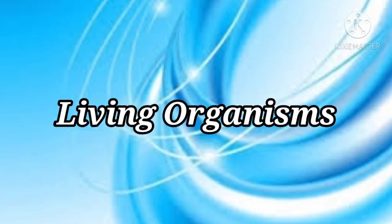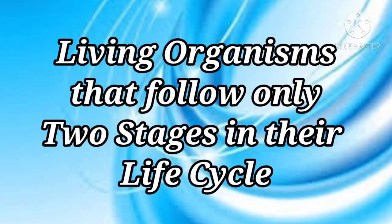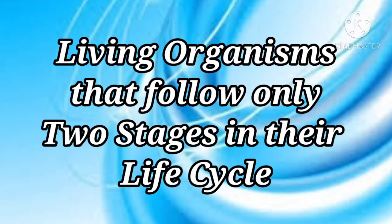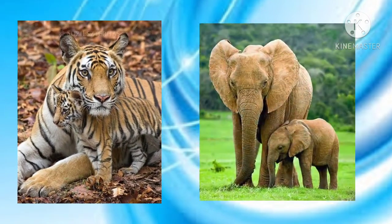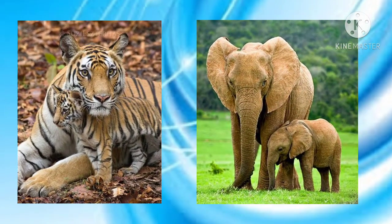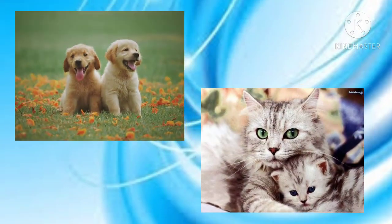There are living organisms that follow only two stages of their life cycle, namely tigers, elephants, dogs, cats, and other forms of mammals.